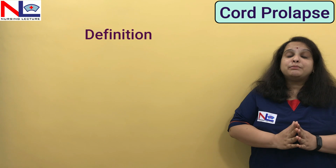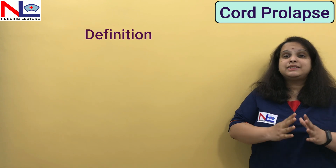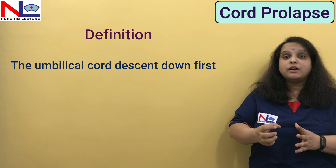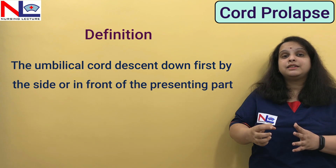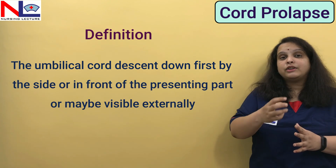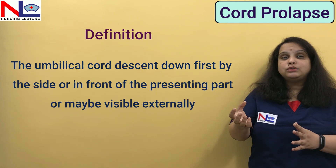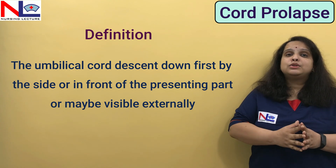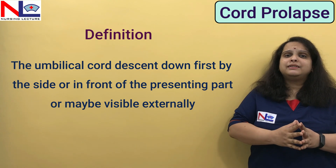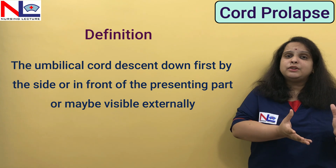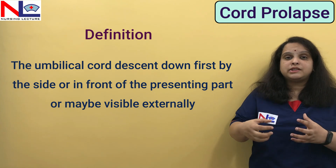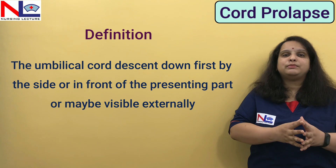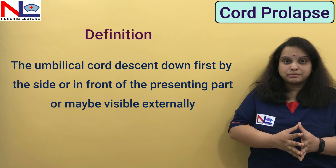What do we mean by cord prolapse? It simply means when the cord comes first and it releases through the vagina, or it comes out through the vulva and may be externally visible — while the fetus still lies within the uterine cavity and the cord is visible or comes out. This condition is called cord prolapse.